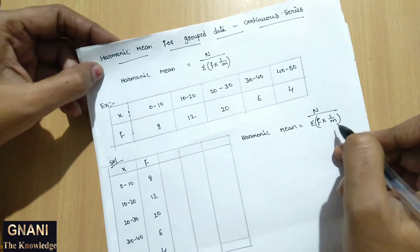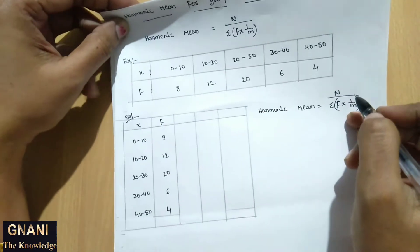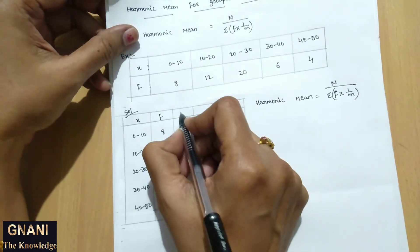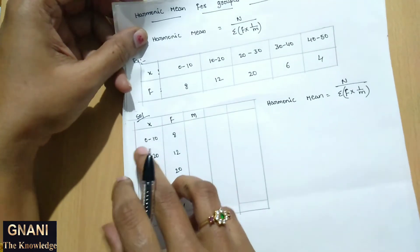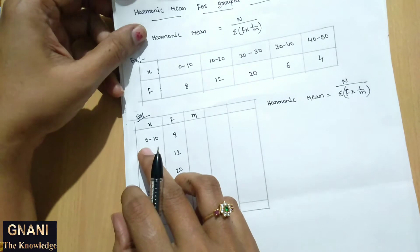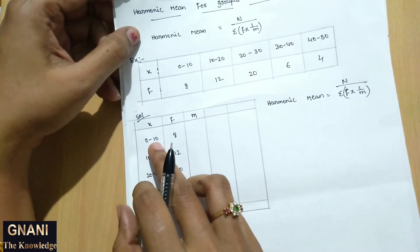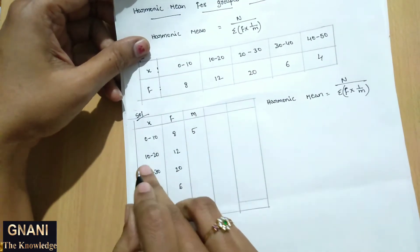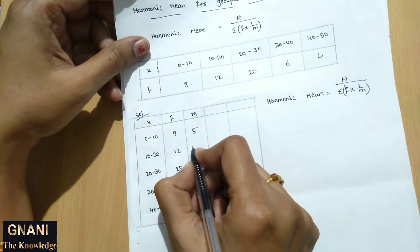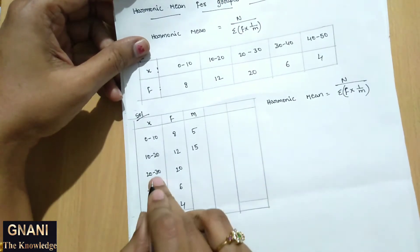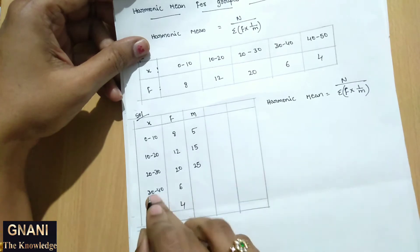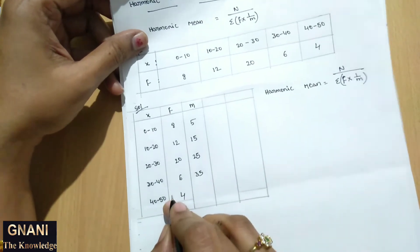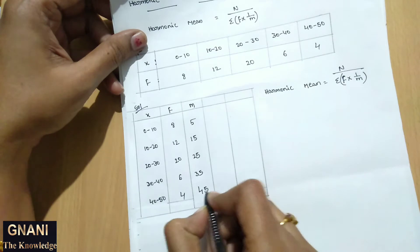Here M means the mid-value of the class interval. So we find the M values — the middle value of each class interval. For 0 to 10, the middle value is 5. For 10 to 20, it is 15. For 20 to 30, it is 25. For 30 to 40, it is 35. And for 40 to 50, it is 45.